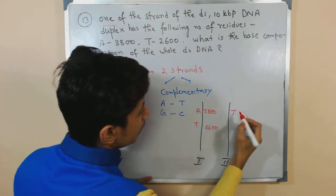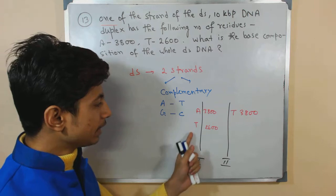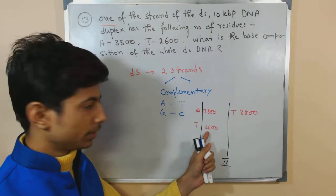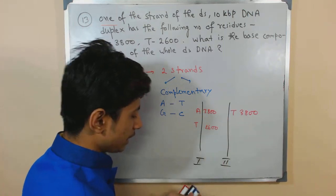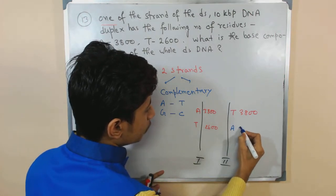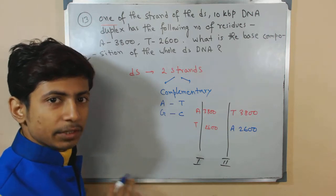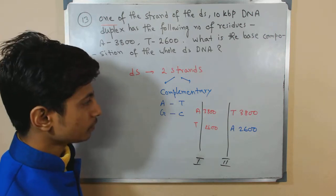So here, thymine will be 3800. Similarly, in this strand where thymine is 2600, on the opposite strand the value for adenine will be 2600. This is what we know from complementary base pairing.